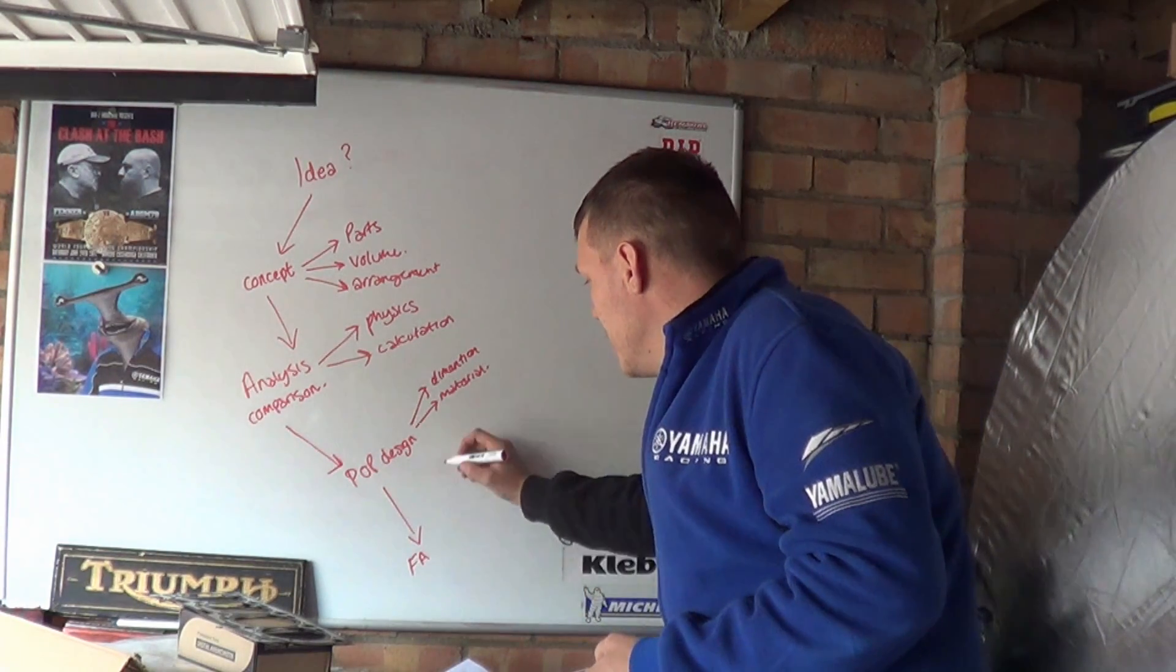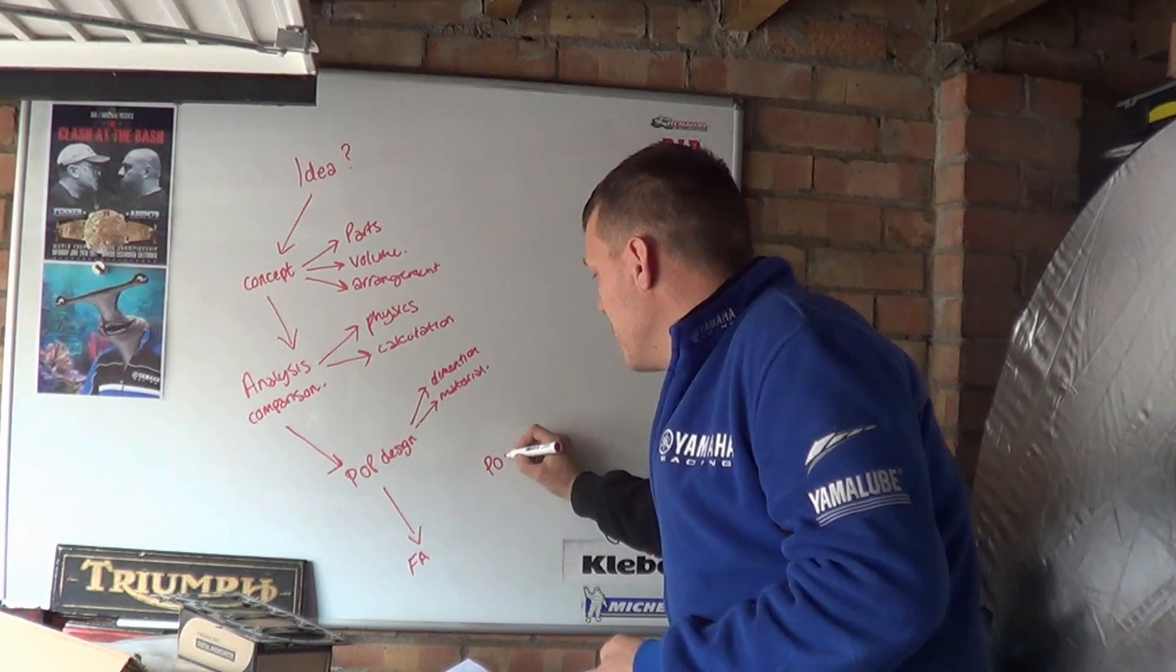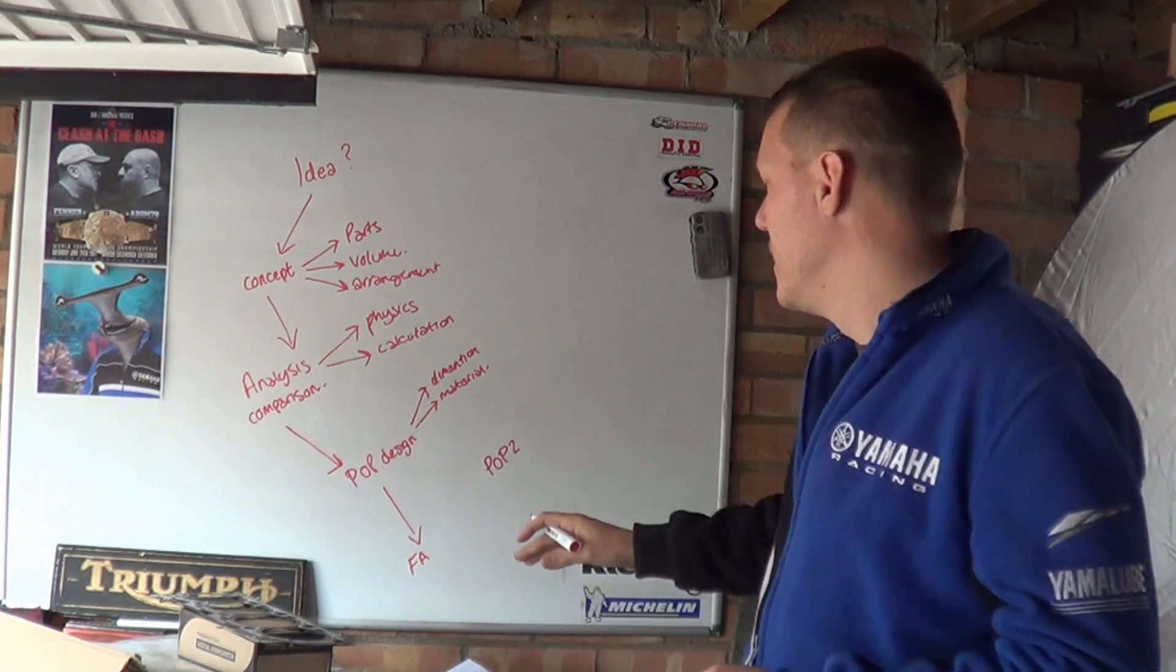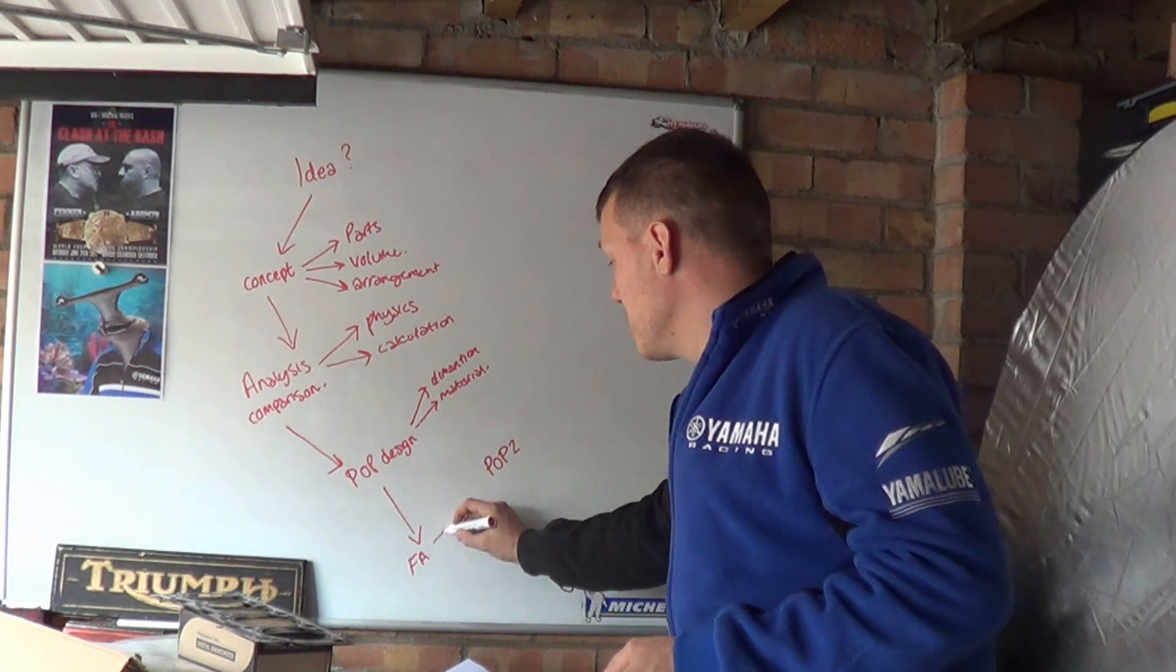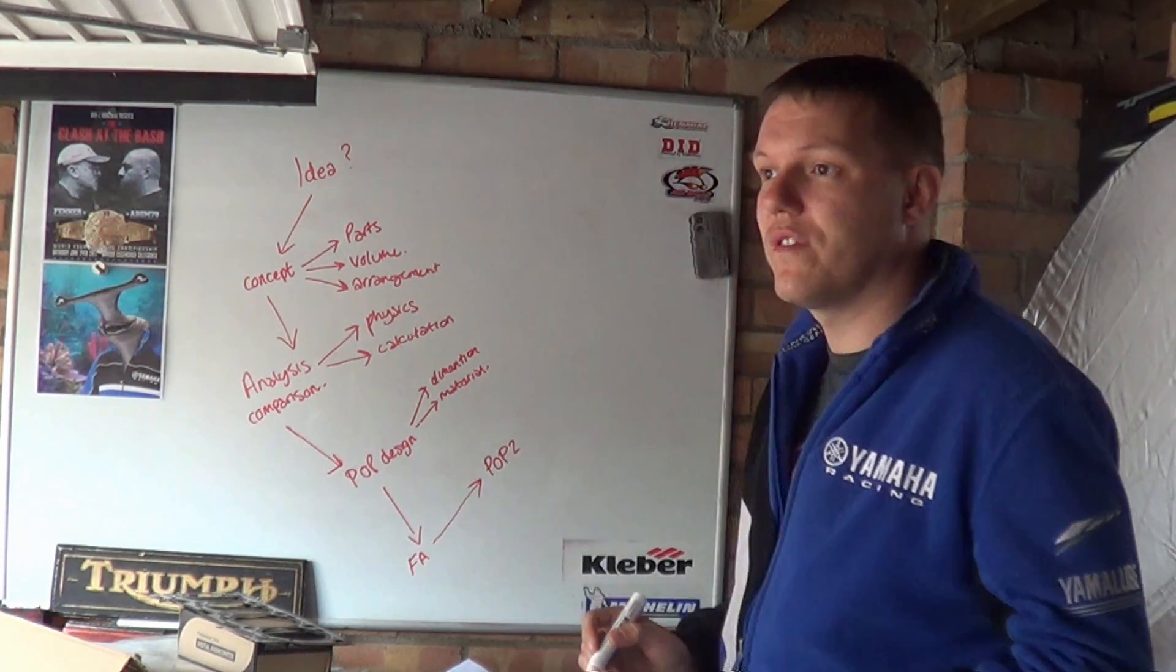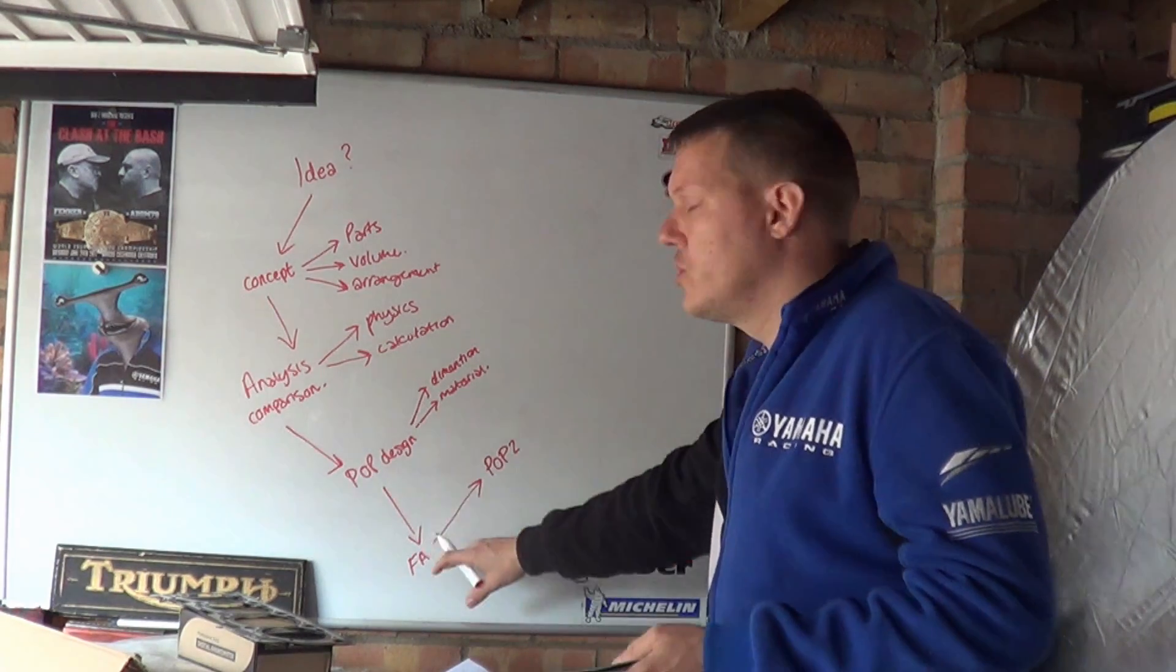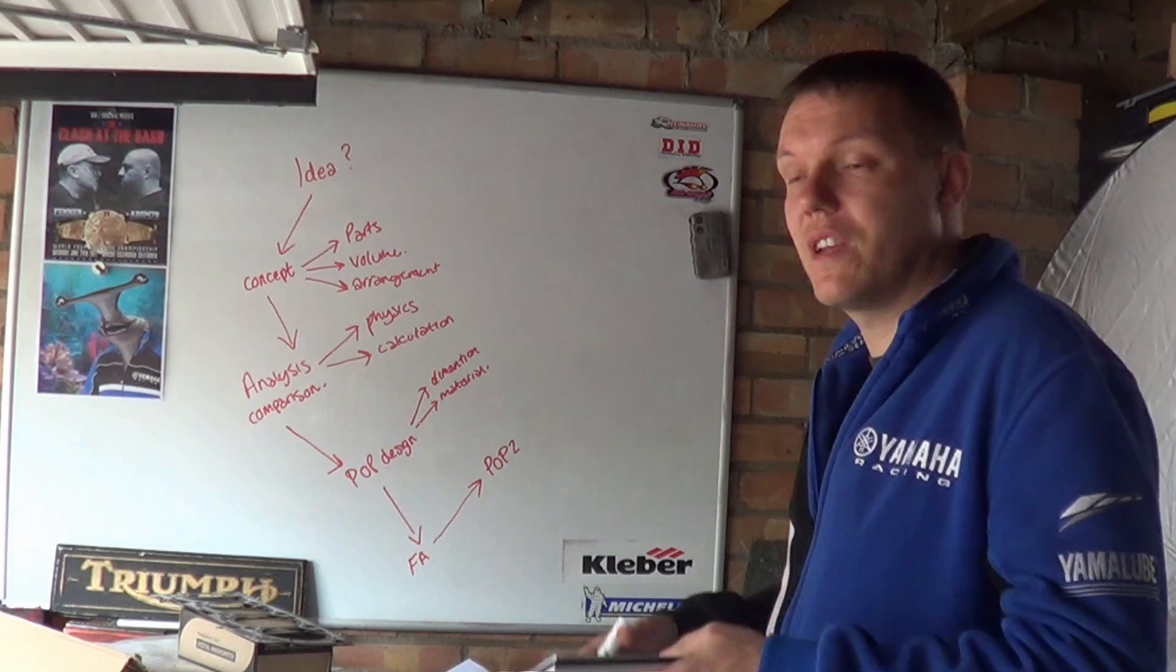And then usually what you do is you can go to a POP 2. A POP 2 design where basically you learn from your failure analysis, stuff like that. And you make modifications. You change your design based on them failures if there were any.